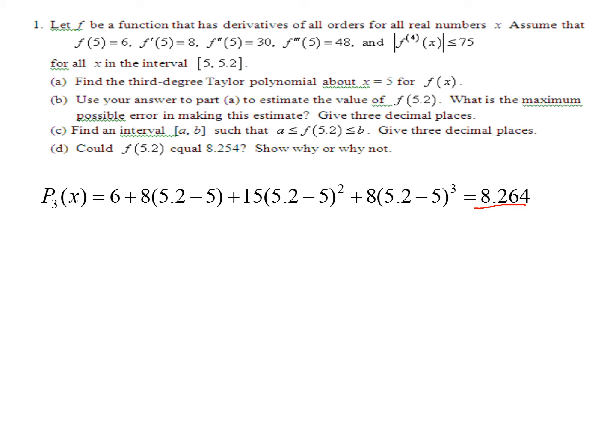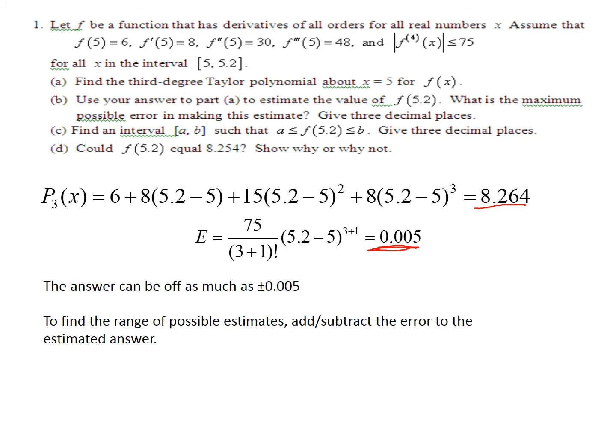The error I found to be 0.005. So what this tells me is that my answer, this 8.264, could be off by 0.005, plus or minus 0.005. So it could be 0.005 less than this or 0.005 more than this, but it cannot be—it has to be within that range.